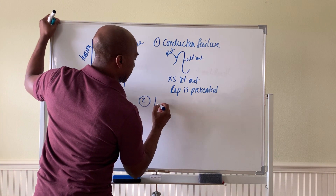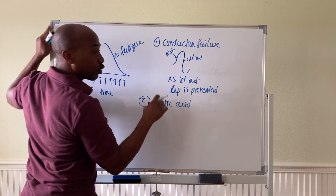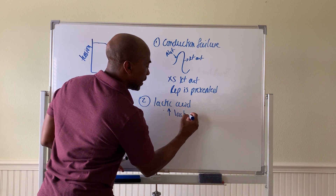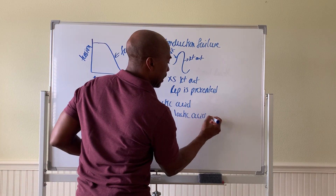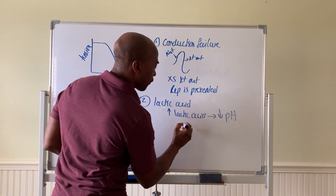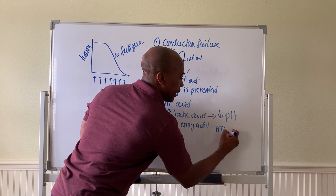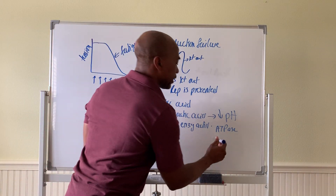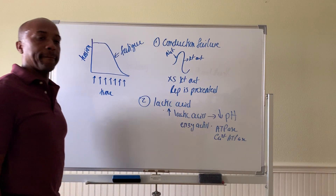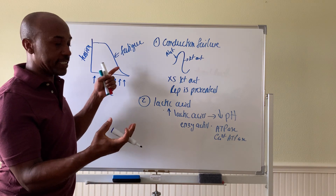Another cause of fatigue is lactic acid buildup. Muscles can shortcut the process of making ATP, and when they shortcut it they create lactic acid. As you increase your levels of lactic acid in the muscle cell, that changes the pH — drops the pH — and once you drop the pH, enzymes stop working. This affects enzyme activity, such as the ATPase in myosin, as well as the calcium ATPases that pump calcium back into the SR. So improper pH will affect enzyme activity and muscle tension generation.